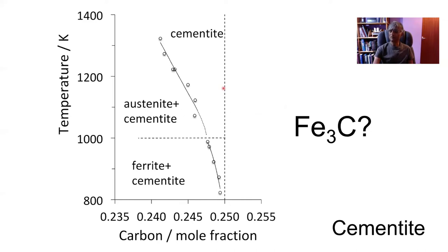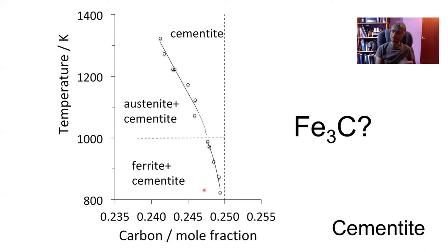We often assume that cementite has a stoichiometric chemical composition Fe₃C, with three atoms of iron per atom of carbon. But in fact its composition actually varies as a function of temperature and the phase with which it is in equilibrium. For example, if you take a mixture of ferrite and cementite and cool it rapidly to a lower temperature, because the solubility of carbon in cementite increases, you would get some precipitation of ferrite inside the cementite — it is the precipitation of ferrite that allows the cementite to increase its carbon concentration. There are published micrographs showing the precipitation of ferrite inside cementite due to this change in solubility.